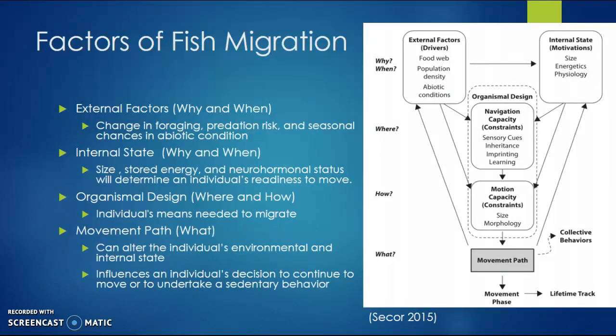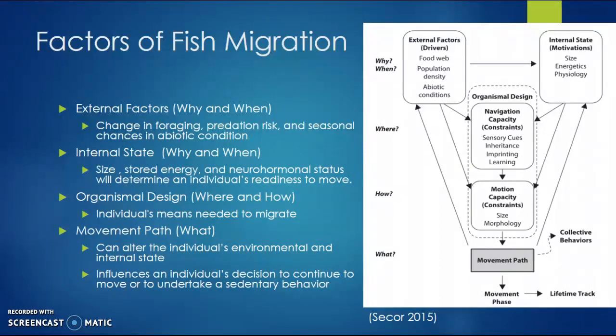There are many factors of fish migration: external factors, internal states, organismal design, and movement paths. For external factors, these are changes in foraging, predation risk, and seasonal changes in abiotic conditions. External factors consider things like the food web, population density, and abiotic conditions.